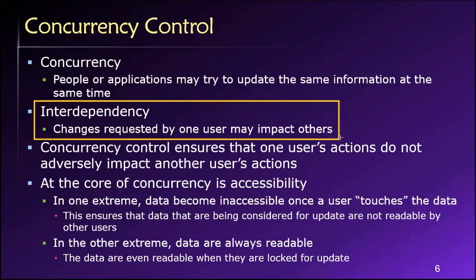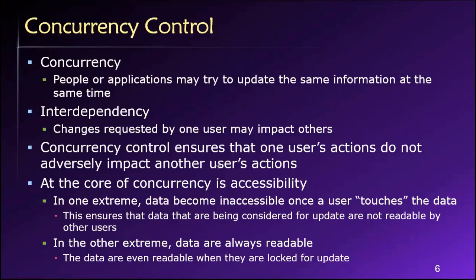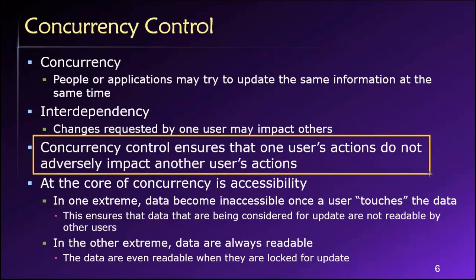If we're in an organization of any reasonable size, it's likely that other employees and other users are going to be touching or working with the same data that we're working with at the same time. So these concurrency control mechanisms are in place to ensure that what I'm doing in the database does not adversely impact what you're doing in the database and vice versa. And of course, we scale that out to all of the people who might be using the database at the same time.